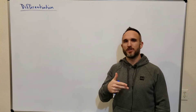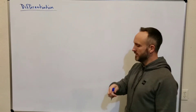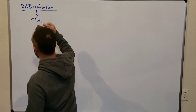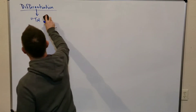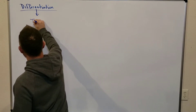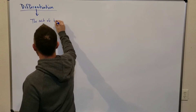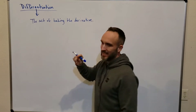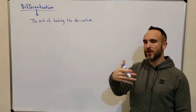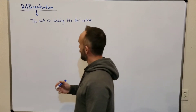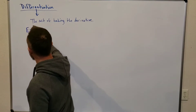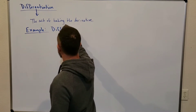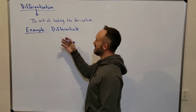You might guess that if you want to take the derivative, you would say 'derivation' or something like that. But differentiation — the word differentiation means the act of taking the derivative. So we're going to practice taking derivatives, and we'll practice with the language and the notation in this video. One way to say 'take the derivative' might be to say 'differentiate.' So differentiate means take the derivative of.